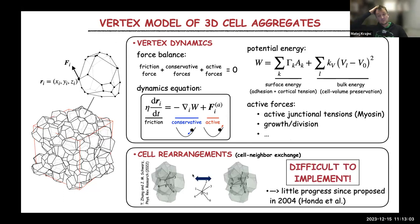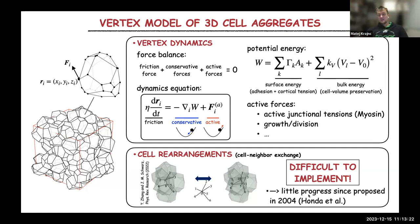The cell rearrangements part is much more complex. This is an analog to the T1 transition but now in 3D — and just because of the convoluted geometry and topology in three dimensions, it's difficult. Maybe this is the reason why there has been quite little progress since this model was first proposed 20 years ago by Honda and colleagues. This was the motivation for us to start thinking about what we can contribute to make cell rearrangements implementation more straightforward.